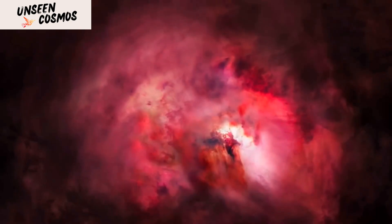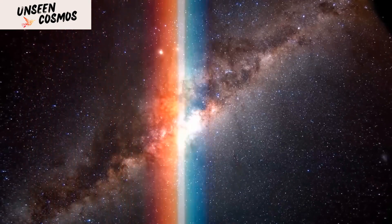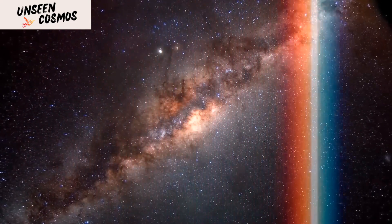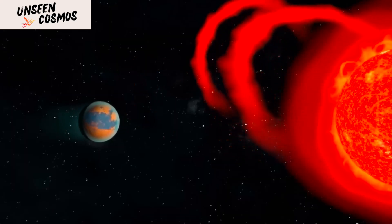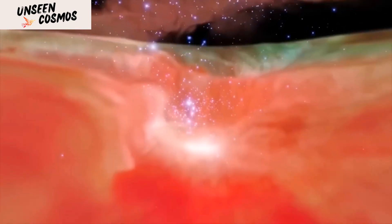Now, you might be wondering how the James Webb Space Telescope managed to take such an incredible image of a galaxy that's so far away. Well, the telescope uses infrared light to see through the dust and gas that often obscure our view of distant galaxies.